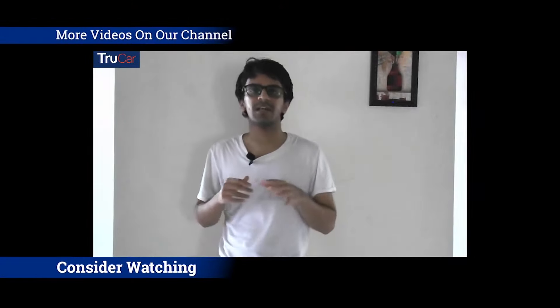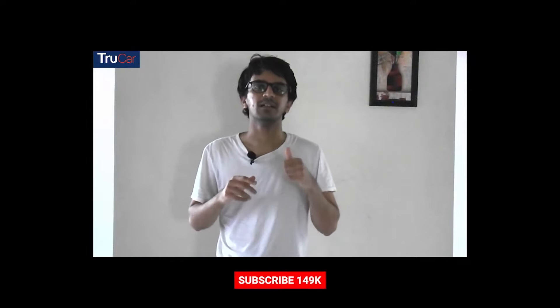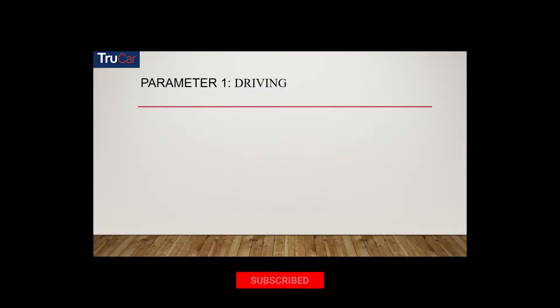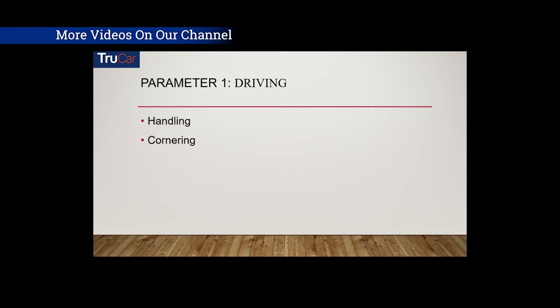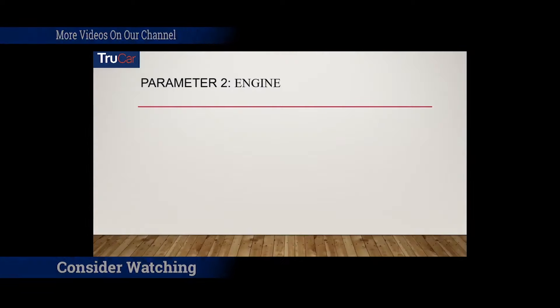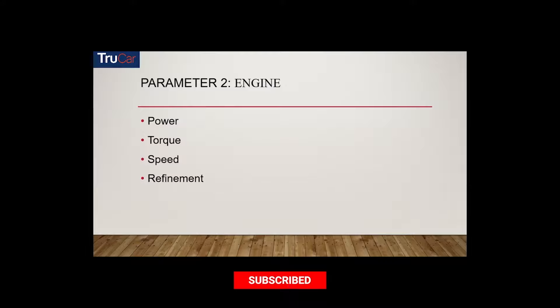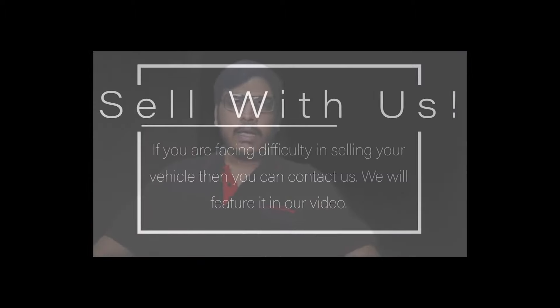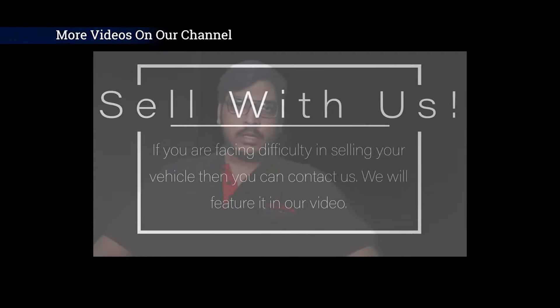I made this review system based on 5 parameters. The first parameter is Driving, which includes handling, cornering, suspension, and brakes — given a star rating. The second parameter is Engine, covering power, torque, and speed — also given a star rating out of 5 stars. I made a video of our vehicle and will feature it in the next video. So let's go to the video.